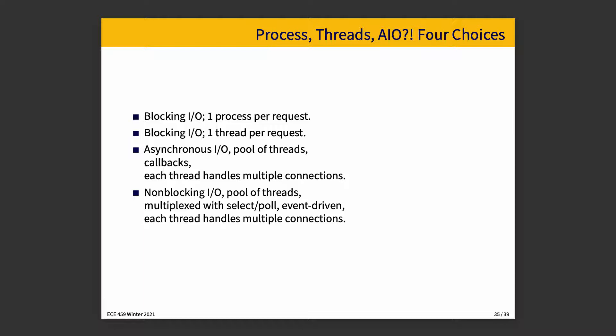The first choice is blocking I/O, one process per request. The next is blocking I/O, one thread per request. Then we have asynchronous I/O with a pool of threads and callbacks, where each thread is handling multiple connections. And then there's non-blocking I/O with a pool of threads, multiplexed with select and poll, event-driven, each thread having multiple kinds of connections. We'll talk about each of them in at least a little bit of detail.